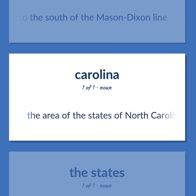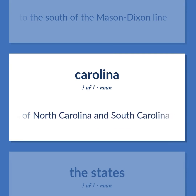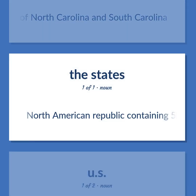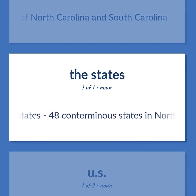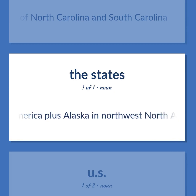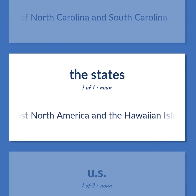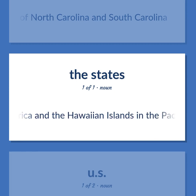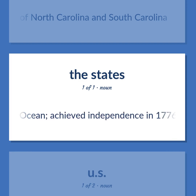The area of the states of North Carolina and South Carolina. North American Republic containing 50 states — 48 contiguous states in North America plus Alaska in northwest North America and the Hawaiian Islands in the Pacific Ocean. Achieved independence in 1776.